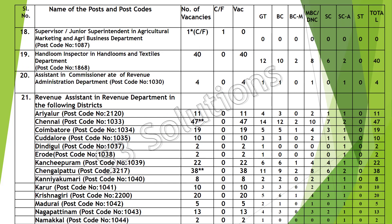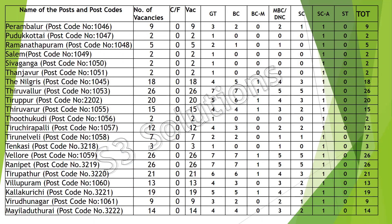Carry Forward Vacancies include Hand Loom Inspector in Hand Loom, and Assistant in Commission Rate — 4 vacancies. Revenue Assistant and District-wise vacancies are also split up, with Balance District vacancies for Revenue Assistant.